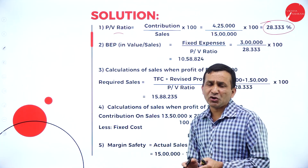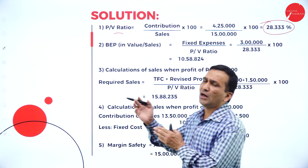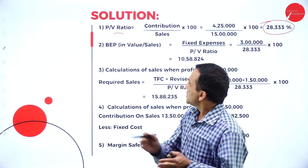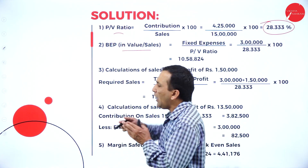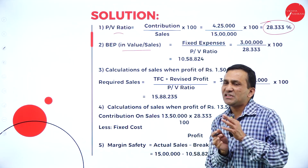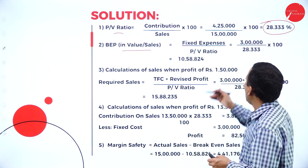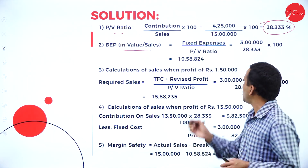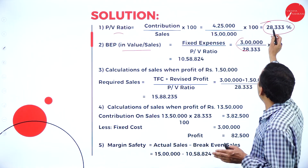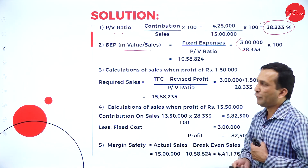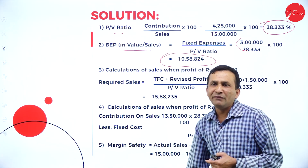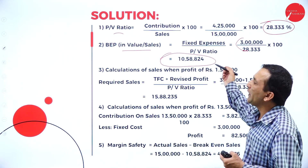For the first formula in the question — PV ratio — the formula is contribution divided by sales into 100. Contribution is 4 lakh 25,000 and sales value is 15 lakhs, so PV ratio is 28.33%. After getting the PV ratio, we calculate BEP in sales. Fixed expense from the statement is 3 lakhs, divided by PV ratio 28.33 into 100. The BEP in sales value is 10,58,824.